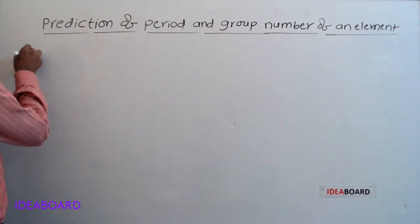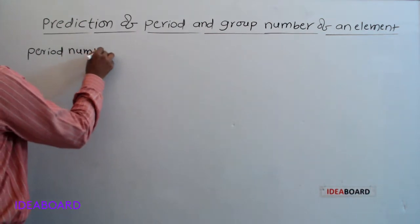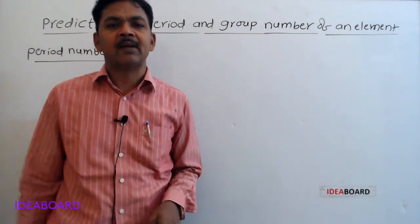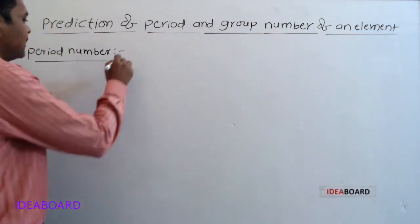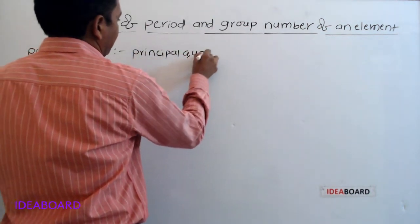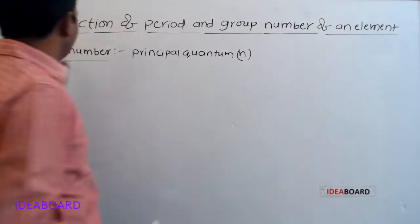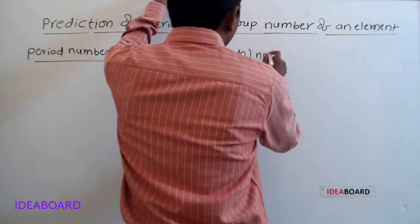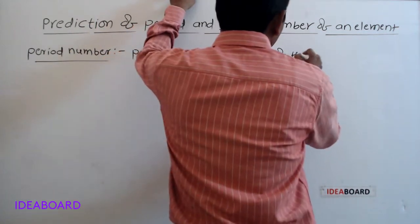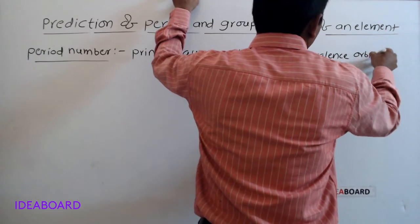First, period number. Period number is equal to the principal quantum number of the valence orbit. It is denoted by n. So, period number equals the principal quantum number of the valence orbit.